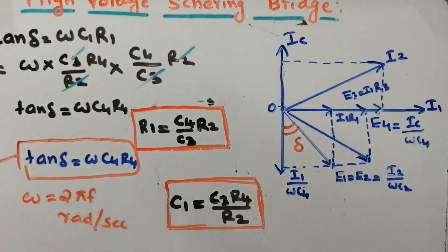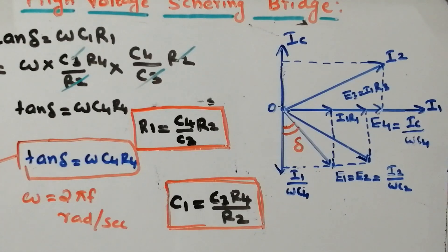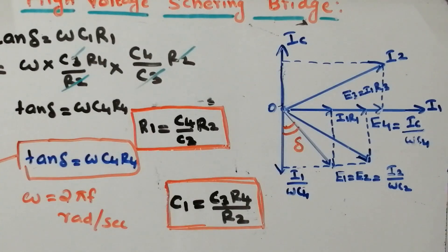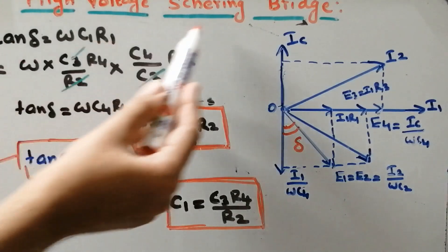Tan delta is known as loss tangent. With the help of loss tangent, you can determine how much heat will be dissipated — that means dielectric loss. Loss tangent and dielectric loss are essentially the same term. This is the way to determine the value of dielectric loss by using high voltage Schering bridge.